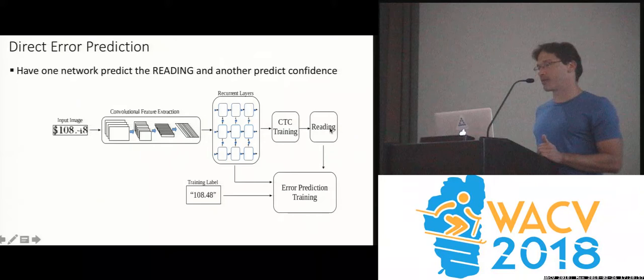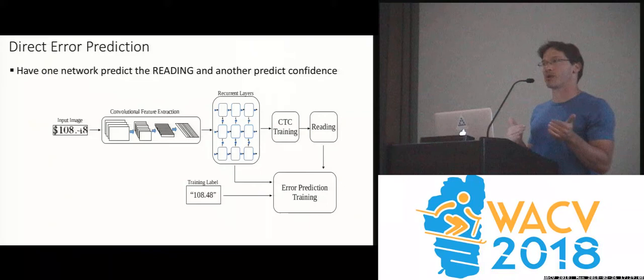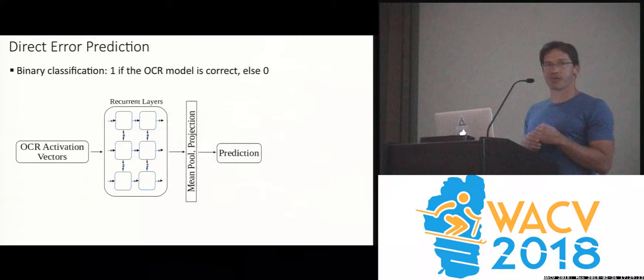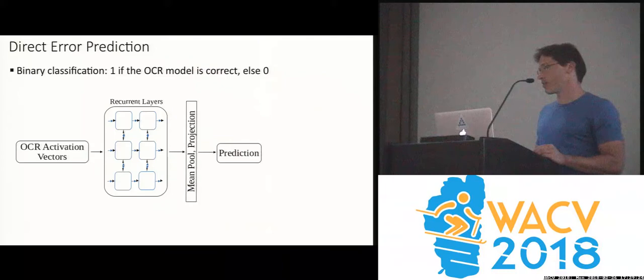During training, we have the reading and the ground truth. If the two are the same, that is a positive label — we were successful. If they differ, we know the model was mistaken. This gives us a binary classification problem, and we train using standard binary classification losses to produce the confidence score.